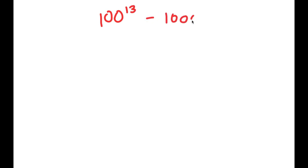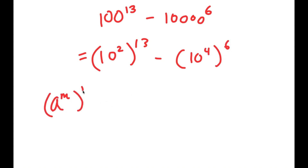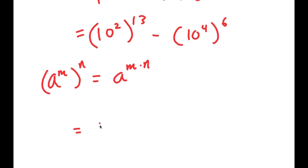Alright, so in this video I'm going to be solving the problem 100 to the power of 13 minus 10,000 to the power of 6. To solve this, I'm going to first start by rewriting 100 as 10 squared. So I get 10 squared to the power of 13, minus 10,000 rewritten as 10 to the power of 4. Now, if I have something in the form a to the power of m to the power of n, this is equal to a to the power of m times n. So this turns into 10 to the power of 26 minus 10 to the power of 24.